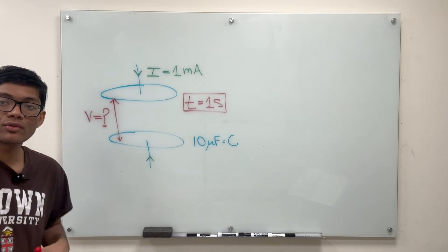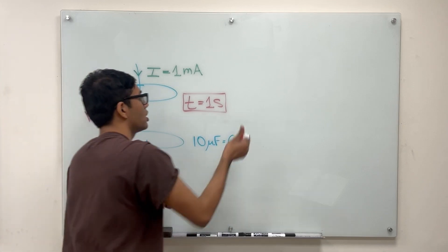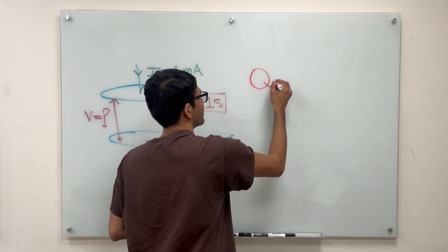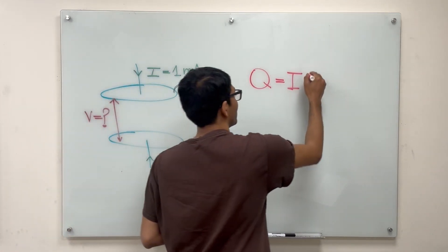Okay so how do we solve this problem? We'll need just two facts to solve this problem. Number one, the charge on the plates is simply how much current is being supplied to the plates times how long we've been waiting, times the time.